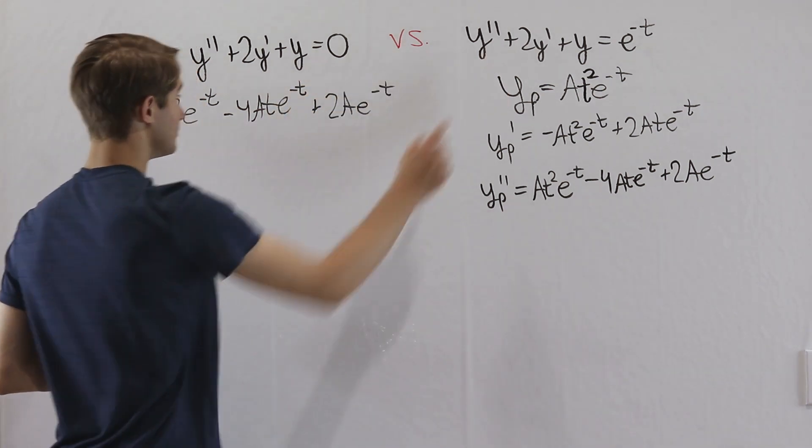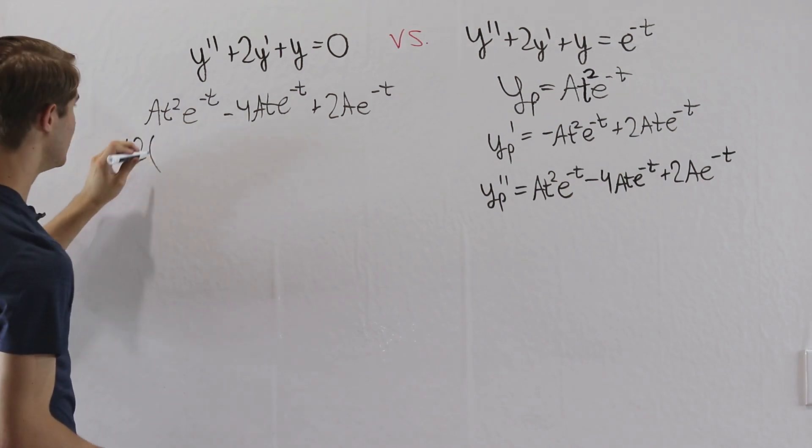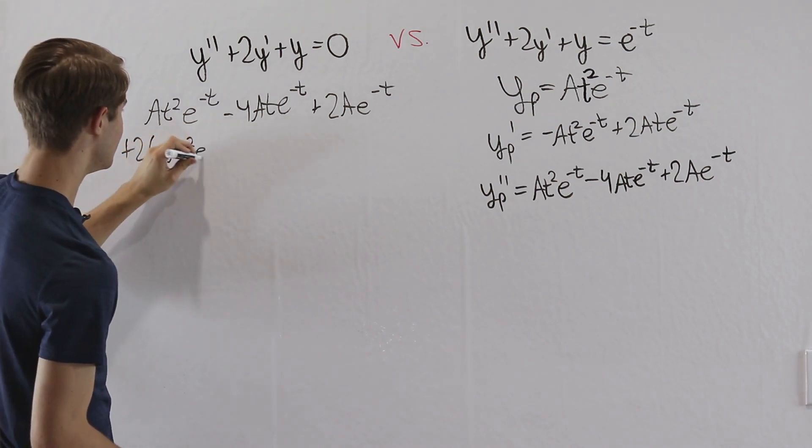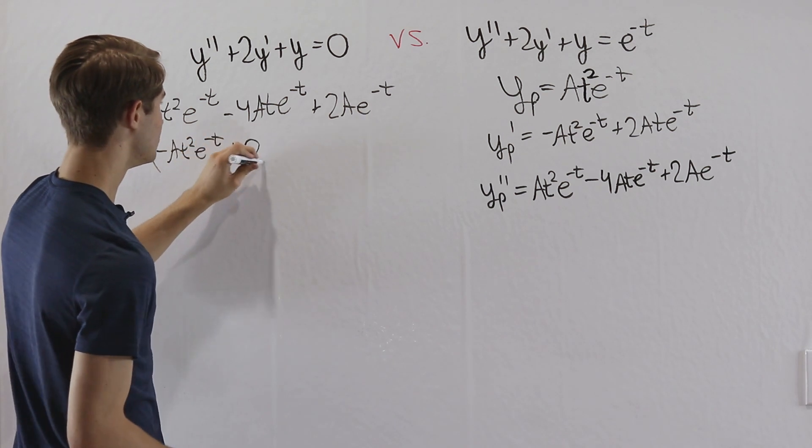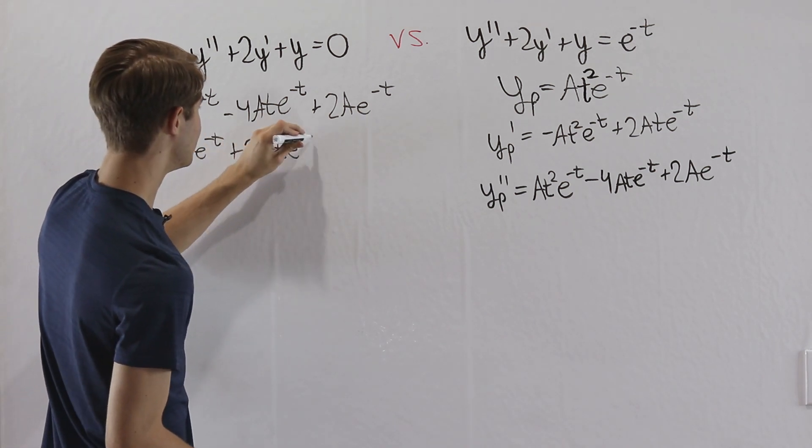Then we have plus 2y prime, so plus 2 and then negative a t squared e to the negative t plus 2 a t e to the negative t.